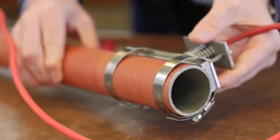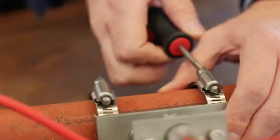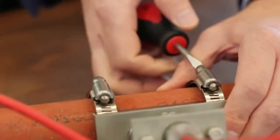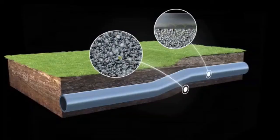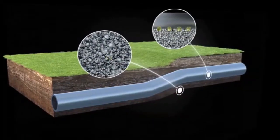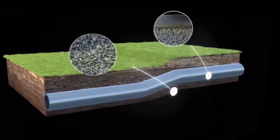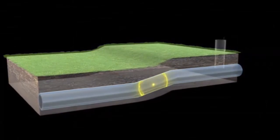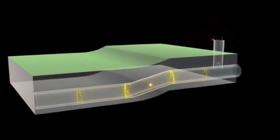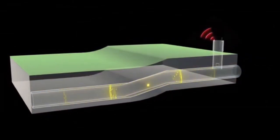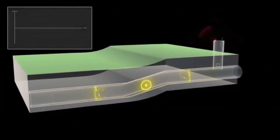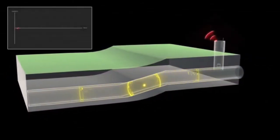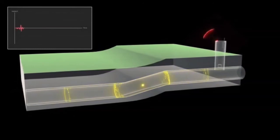The system can be used to monitor long lengths of buried infrastructure. For example, a series of sensors can be attached to a pipe and acoustic emission monitoring used to detect areas of deformation, which can provide information on failure.